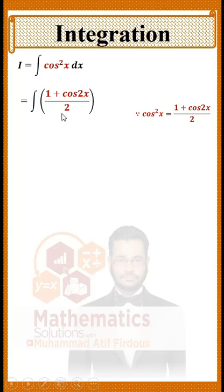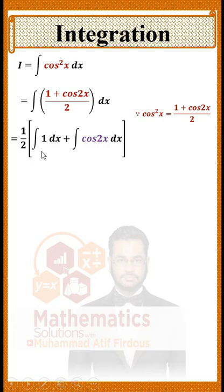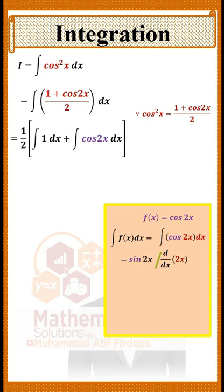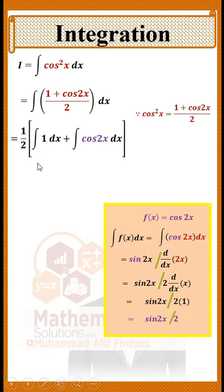Writing (1 + cos2x) / 2 and taking each integral separately, the integral of 1 is x. For the integral of cos2x, we divide by the derivative of its angle: since the derivative of 2x is 2, the integral of cos2x equals sin2x / 2.